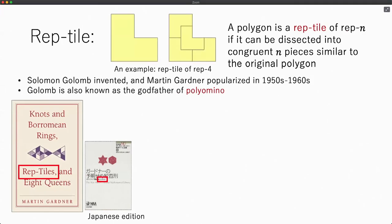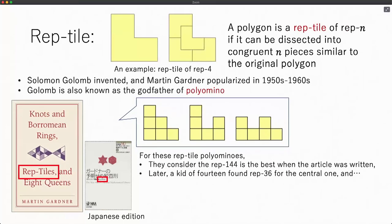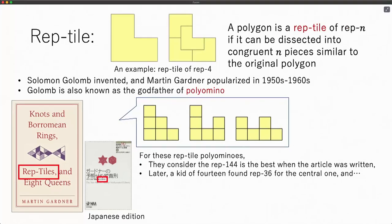As Sabina says, Solomon Golomb first invented and Martin Gardner popularized this notion worldwide through this book. When I translated your hero to this Japanese edition, I learned that Martin Gardner took these three patterns as special rep-tile polyominoes. When this article was written, the rep-tile of 144 pieces was the best known pattern. After publication, a kid of 14 years old found 36 for the central ones.